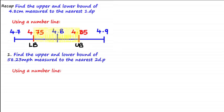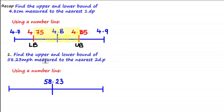Using the number line, we place the rounded value 58.23 in the middle. We need to find the next value up and down using the fact that this has been measured to the nearest two decimal places. The value at the second decimal place is 3. So we add 1 to get the next value up: 58.24, and subtract 1 to get the next value down: 58.22.